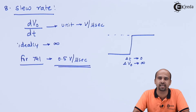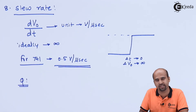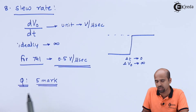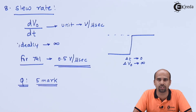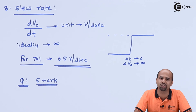This is how we have completed our eight characteristics of the operational amplifier 741. This question will come in your university examination for 5 marks, where you have to write all eight characteristics step by step and explain each one. Thank you so much for watching. If you liked this video, please like, share, and subscribe to the Ikeda channel.